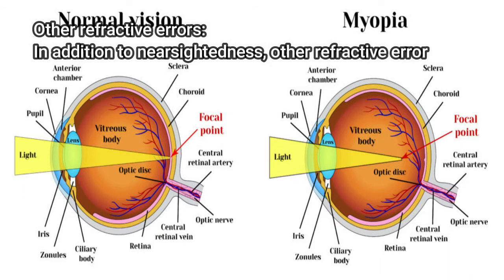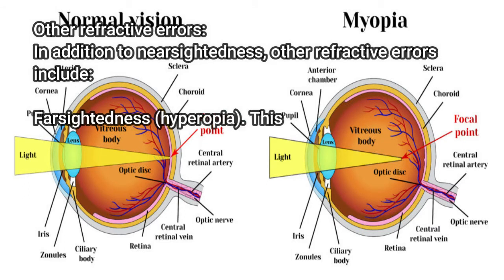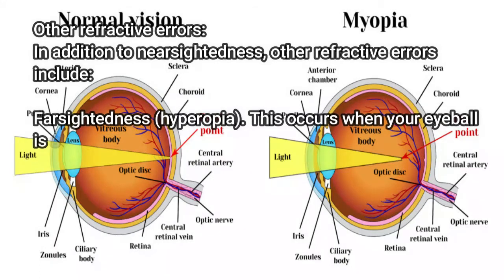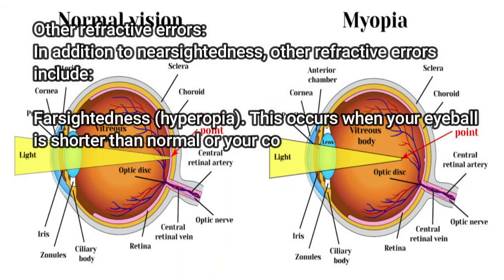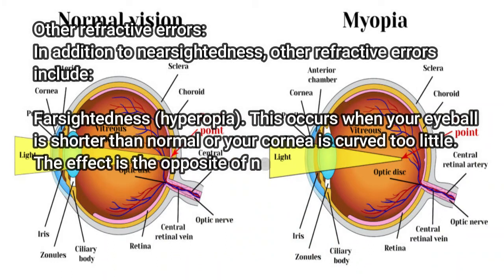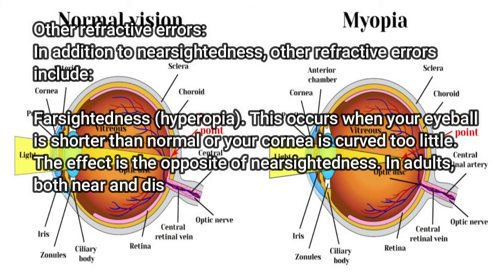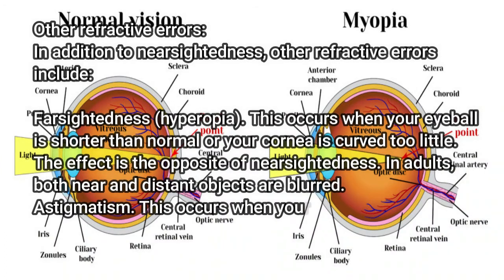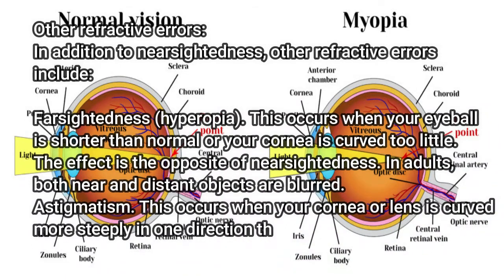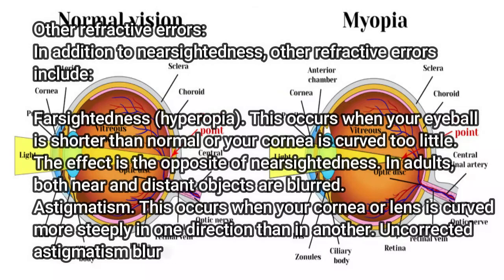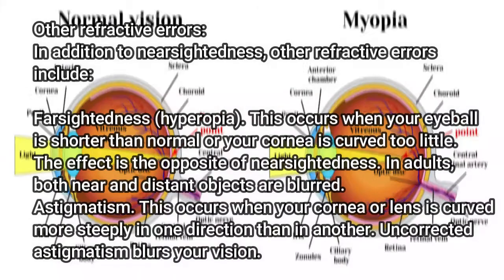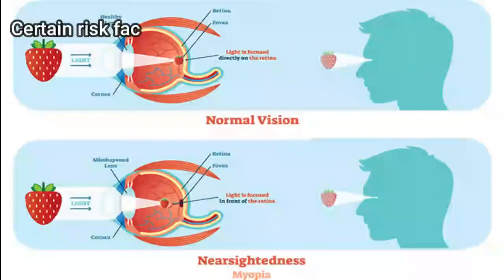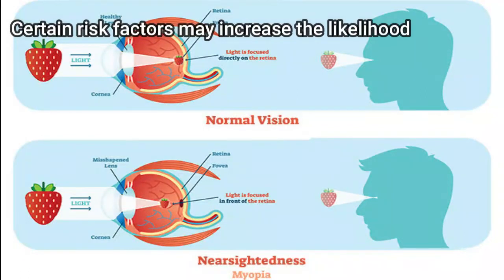Other refractive errors: in addition to nearsightedness, other refractive errors include farsightedness (hyperopia), which occurs when your eyeball is shorter than normal or your cornea is curved too little — the effect is the opposite of nearsightedness; in adults, both near and distant objects are blurred. Astigmatism occurs when your cornea or lens is curved more steeply in one direction than in another; uncorrected astigmatism blurs your vision.